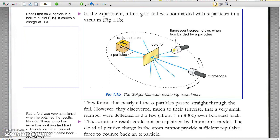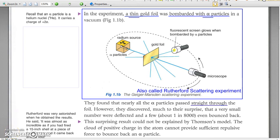In the Geiger-Marsden scattering experiment, a very thin gold foil was bombarded with alpha particles in vacuum. Most alpha particles simply go straight through while a small number is deflected and an even smaller number is bounced back.